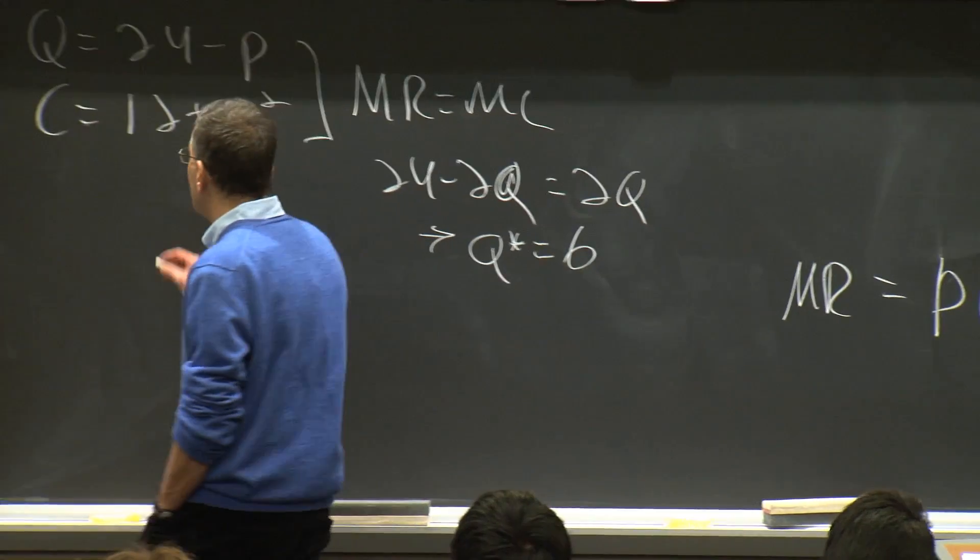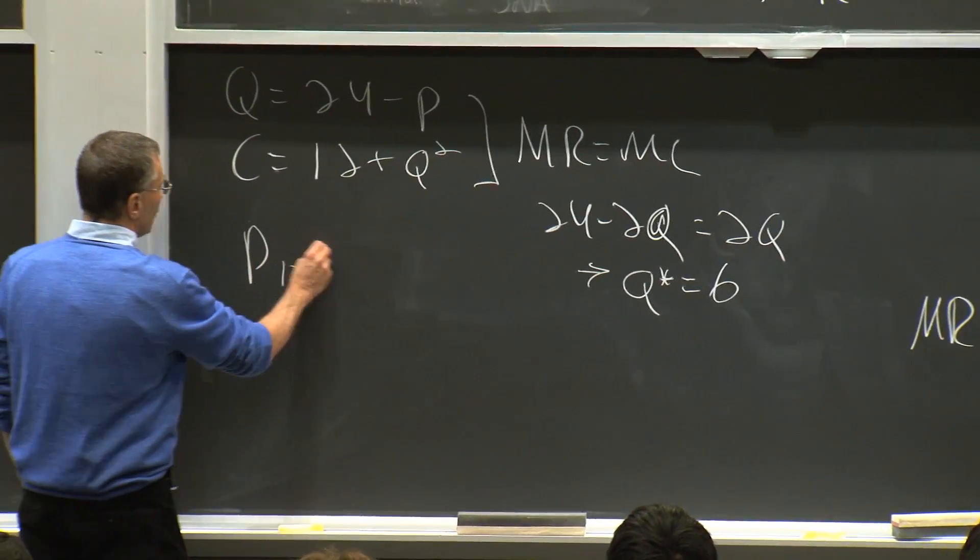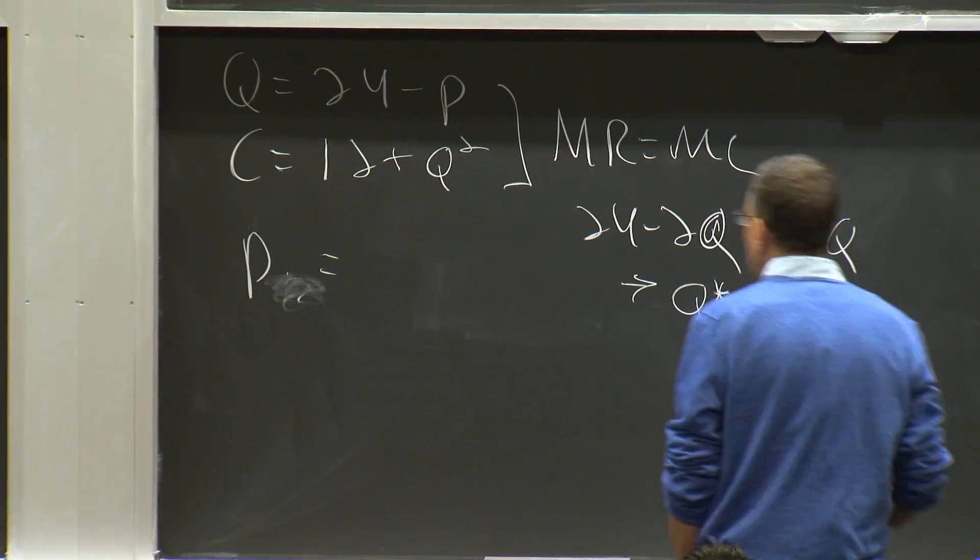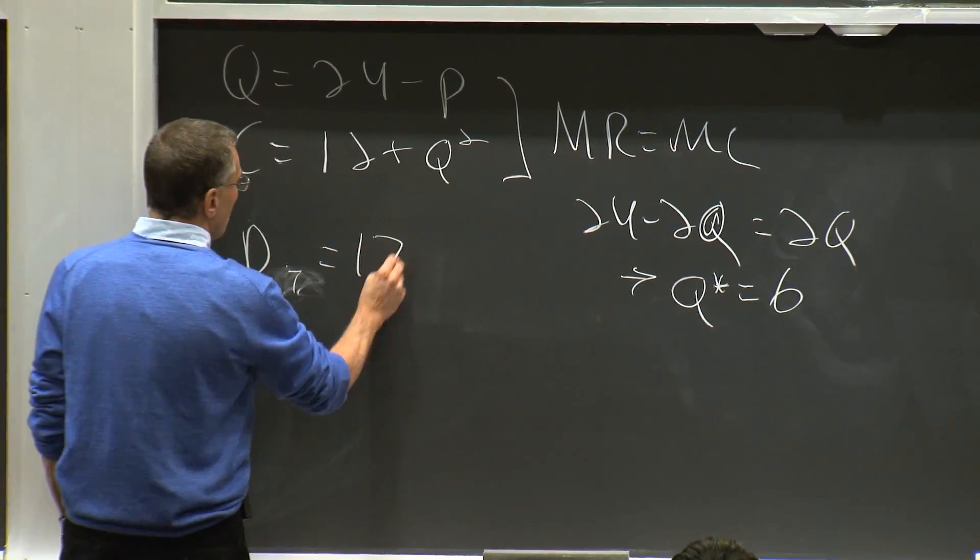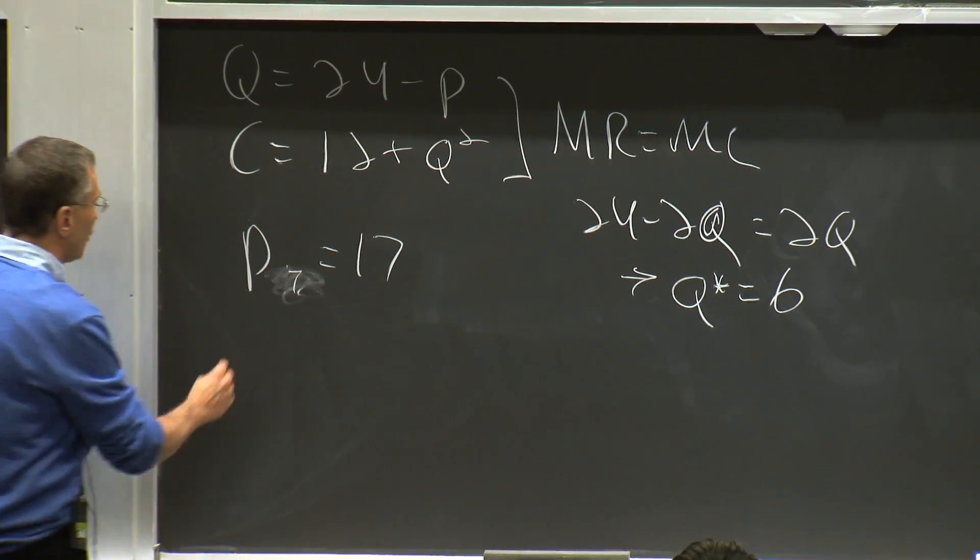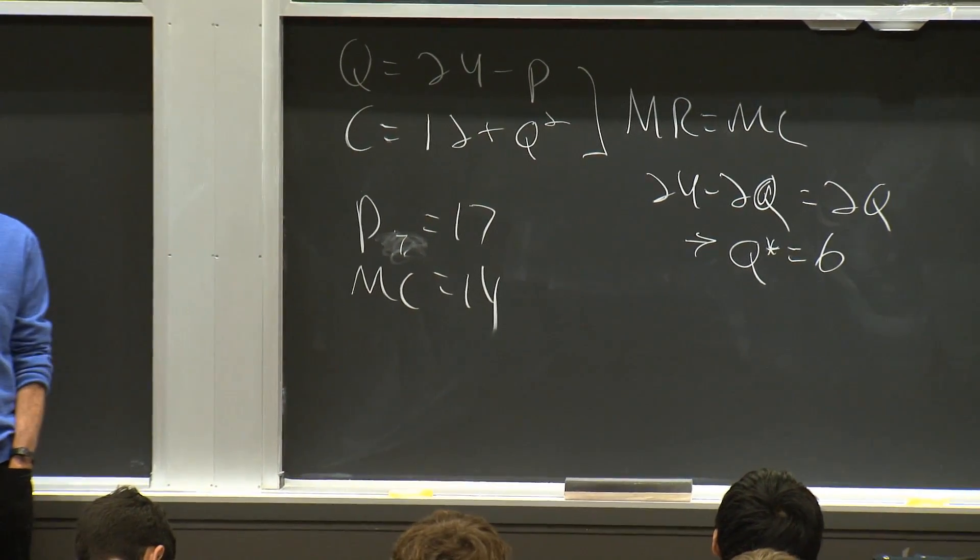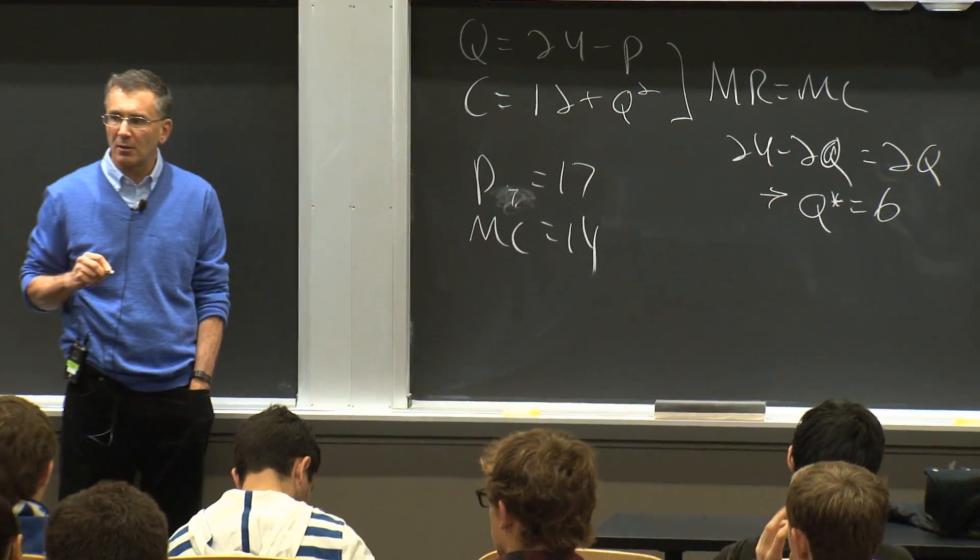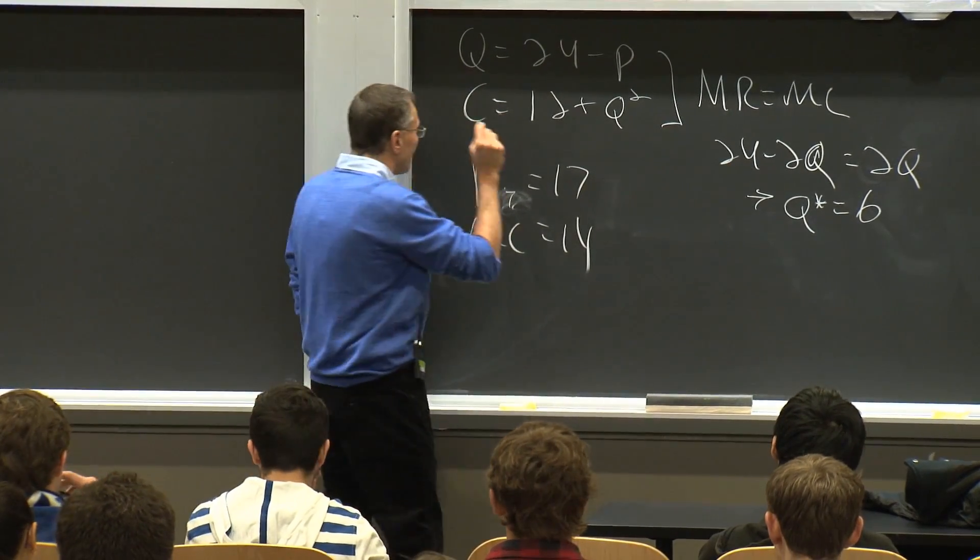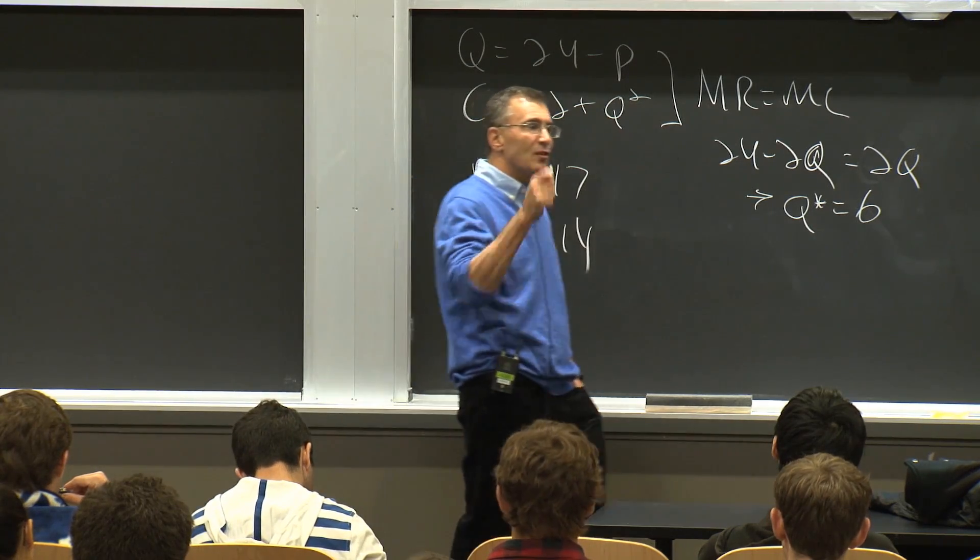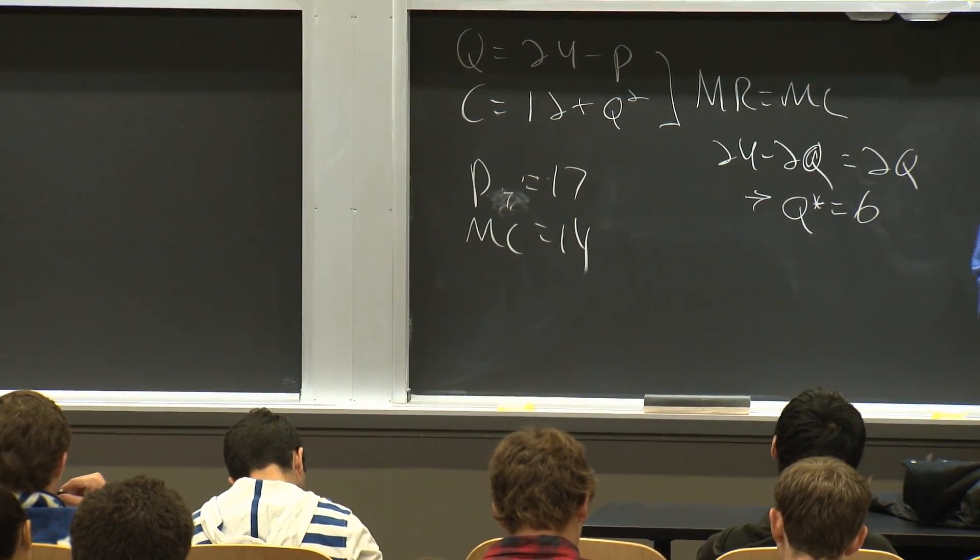And what would his marginal cost be for the seventh unit? The price of the seventh unit would be 17. What would the marginal cost be? Marginal cost would be 14. He would make money. Why doesn't he sell that next unit? Because there's a loss on the previous units. Because that's not his marginal revenue. That's the price. His marginal revenue has to account for the fact that he loses money on the previous units.